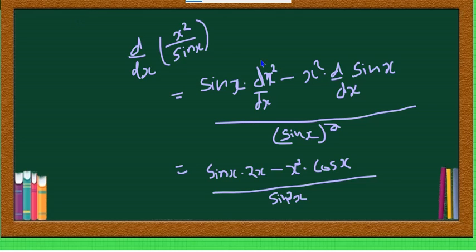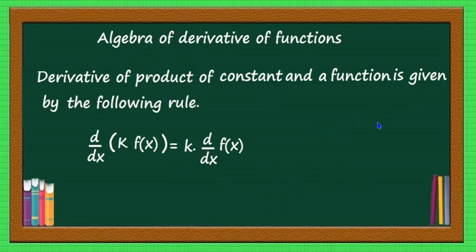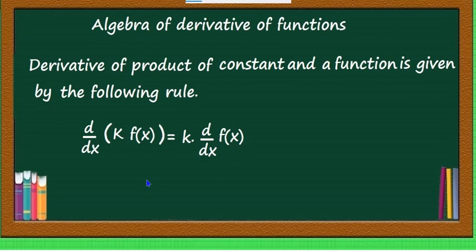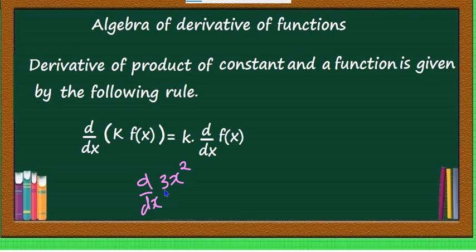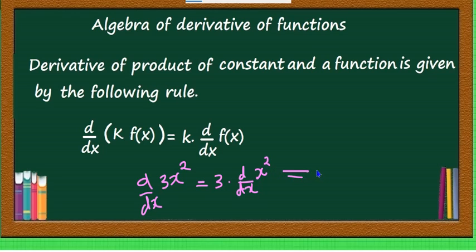Practice more questions so that you become fluent in the application of these rules, which is very important. The last rule is: the derivative of a constant multiplied by a function is k times d by dx of f of x. For example, d by dx of 3x square — the constant 3 can be taken outside — giving 3 into d by dx of x square, which equals 3 into 2x, that is 6x.